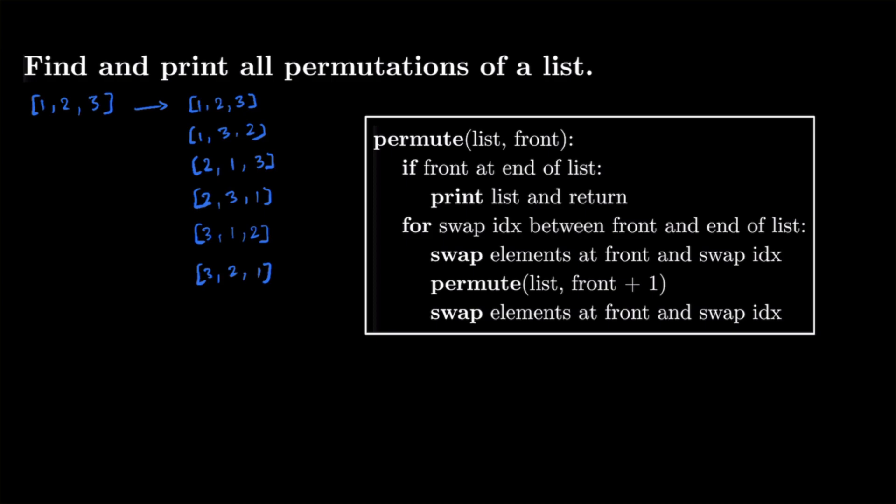Our function is called permute and it takes two parameters: list and front. List is going to be any particular permutation of the list at any point, and front represents the index that we are currently looking at. To make this work, we need front to go from index zero all the way to the end of the list. For each step of front, we iterate from front to the end and keep swapping the index between front and the rest of the list.